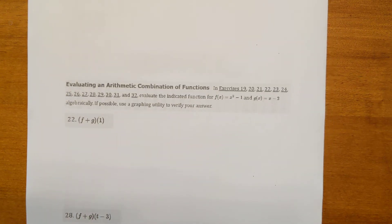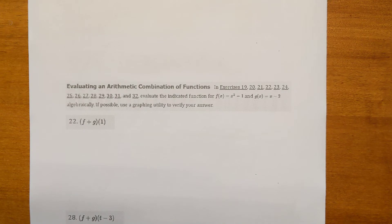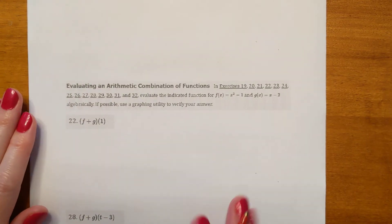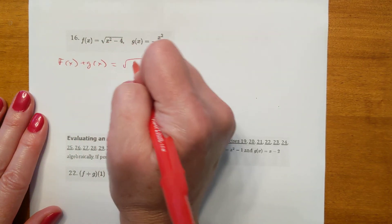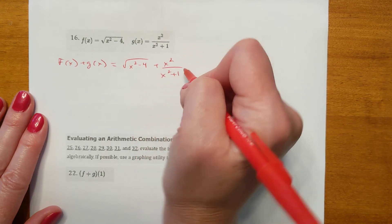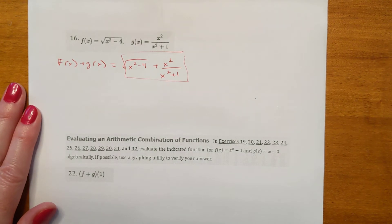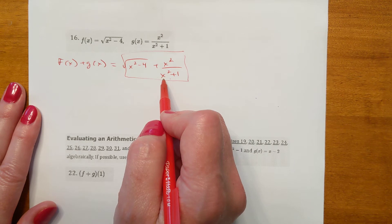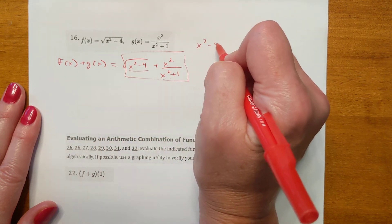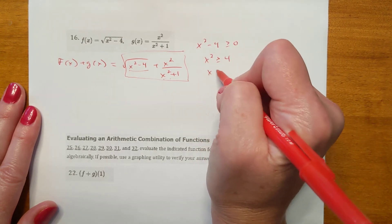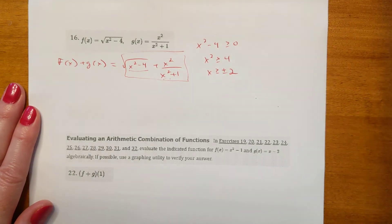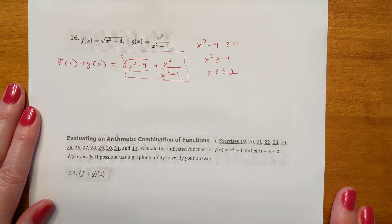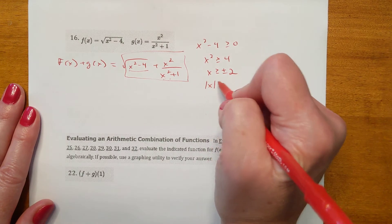Going back to combining functions — we have another example where we do all operations. For f(x) plus g(x), there's nothing we can really do to make it prettier, so we just leave it. We should note the domain though: the expression under the square root, x squared minus 4, needs to be greater than or equal to zero, which means the absolute value of x must be greater than or equal to 2.